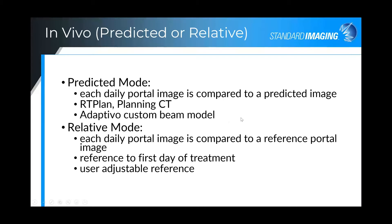The measurements for the beam model are different than what you would enter into your treatment planning system, and it takes one to two hours to acquire this data set, but model generation is very quick. In relative mode, each daily portal image is compared to a reference portal — typically the first day of treatment. If there is an alignment issue on the first day, the user can adjust the reference to any other acquired portal image.